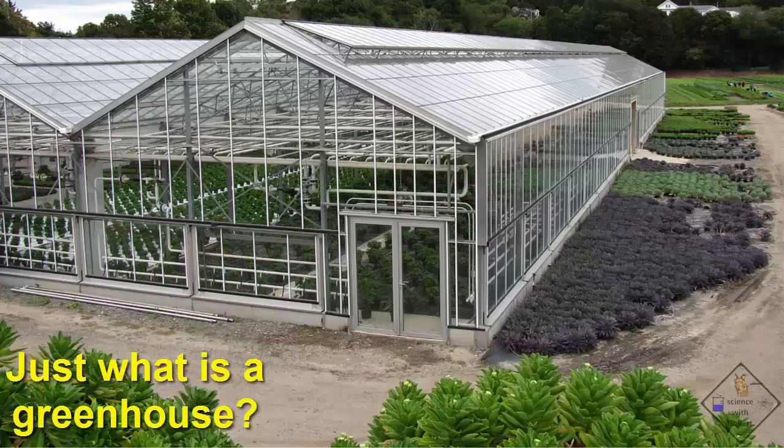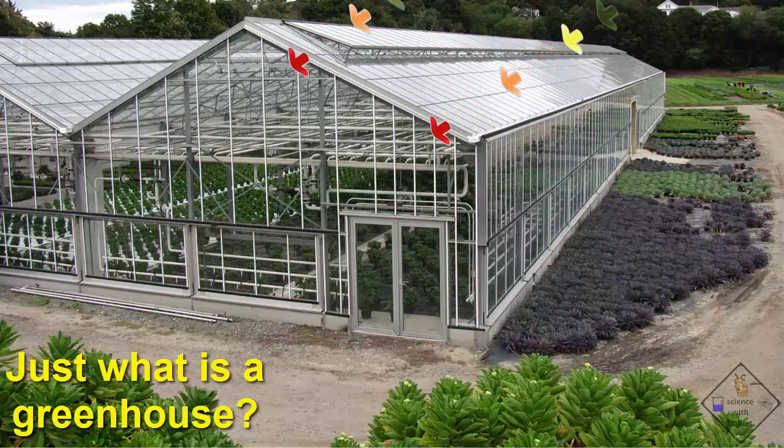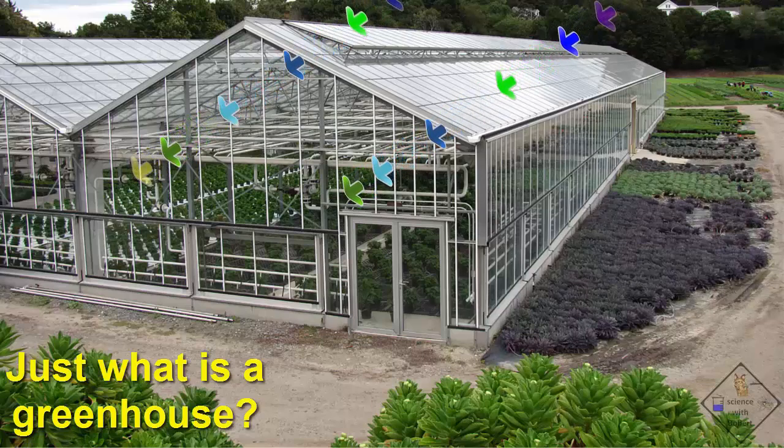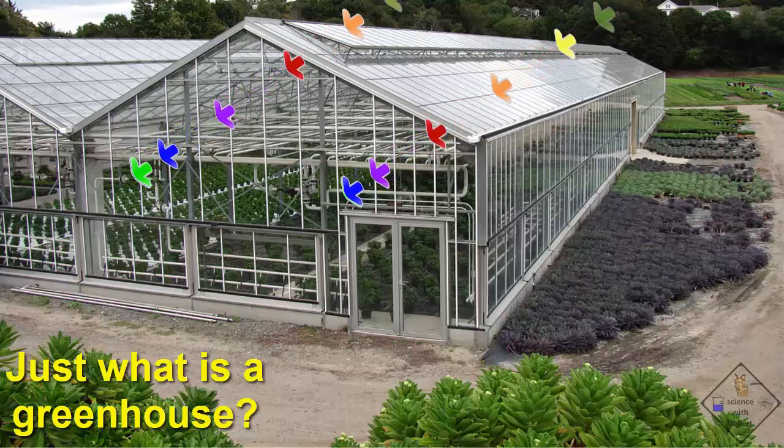Just what is a greenhouse? A greenhouse is a building that is built out of glass. Glass is used because it lets the visible rays of the sun pass through, which are then absorbed by plants and other colored or black surfaces inside the greenhouse.